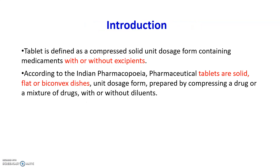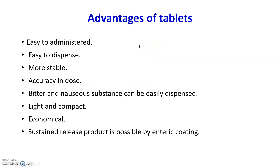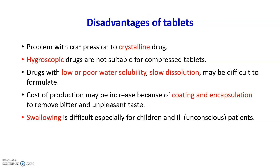A tablet is defined as a compressed solid unit dosage form containing medicaments with or without excipients. According to IP, tablets are solid, flat, bi-convex, dish-like shaped unit dosage forms prepared by compression of a drug or mixtures of two or more drugs with or without excipients. Advantages of tablets include: easy to administer, easy to dispense, more stable, accurate in dose. Bitter and nausea-inducing substances can be dispensed with the help of excipients like taste masking. They are light, compact, economical, and sustained-release or controlled-release tablets can be prepared.